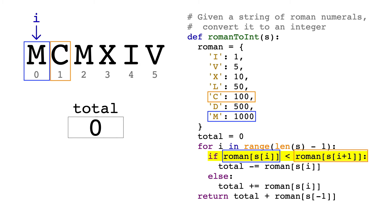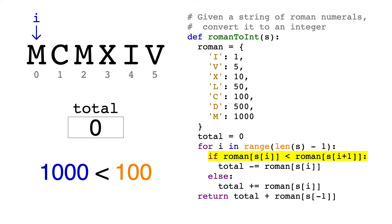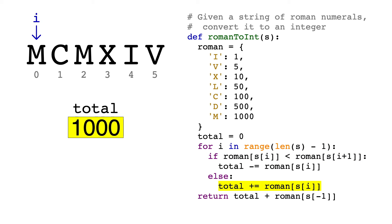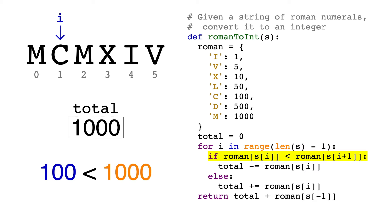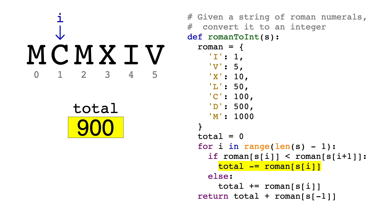So what this line is asking is: is 1000 less than 100? Obviously this is false, so we'll skip to the else block and just add the current value. M is 1000, so we'll add 1000 to our total. Now let's look at the next character at index 1. C corresponds to 100, and the character after it is M, which corresponds to 1000. So now we are asking: is 100 less than 1000? This is true, so instead of adding 100, we're going to subtract 100 from our total. The total is now 900.